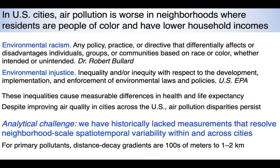An analytical challenge we've historically faced is the lack of measurements that resolve neighborhood-scale spatial-temporal variability within and across cities. For primary pollutants directly emitted into the atmosphere, we expect horizontal and vertical distance-decay gradients on the order of hundreds of meters to one to two kilometers. If we look at regulatory monitoring networks — taking Los Angeles, arguably the best-monitored city in the world for NO2 — only 3 to 5% of residents live within two kilometers of a monitor, so we have very large gaps in our observations.